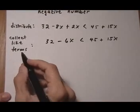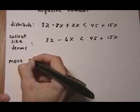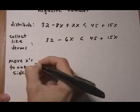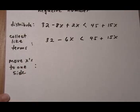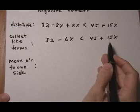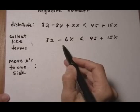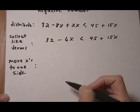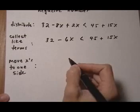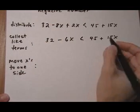After we collect like terms we want to get all x's to one side. We're going to move them either left or right, and in this case I'm going to move them left because I want to end up with a negative in front of the x. That way you're going to see how to deal with that when you get to that final step. But we could move them to the right and avoid having a negative. But let's move them left.